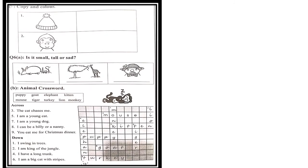Okay friends, on the next page you have to first copy and color — you have two pictures. Copy the text and color it. Next, question number six: is it small, tall, or sad? You have to see which one is small and which one is tall.